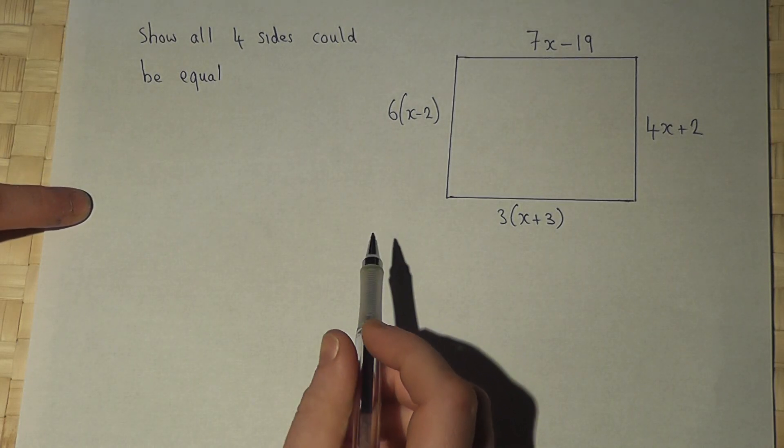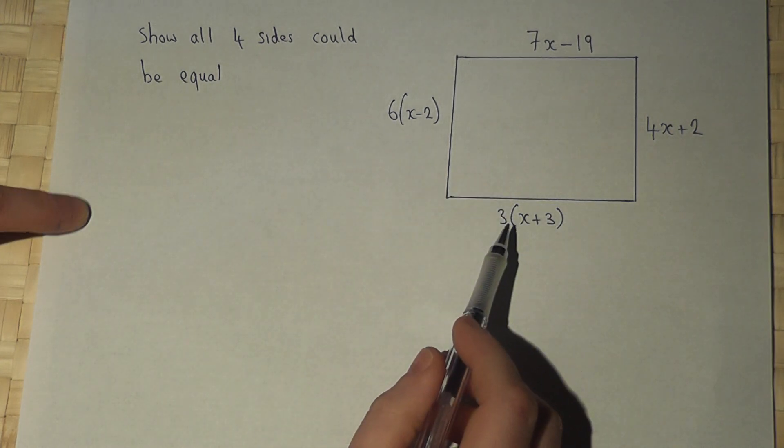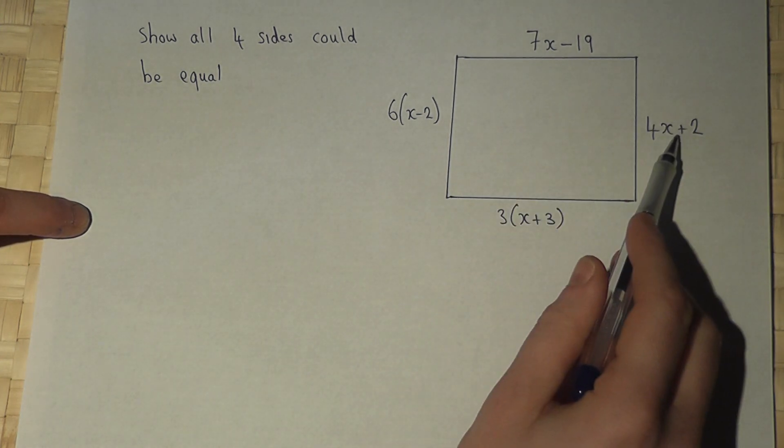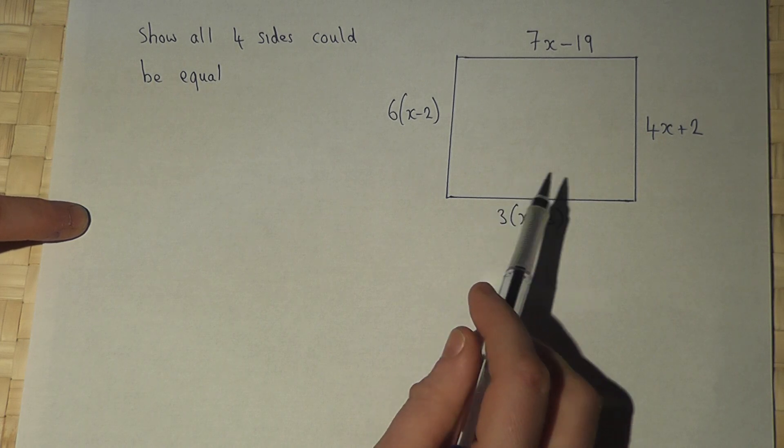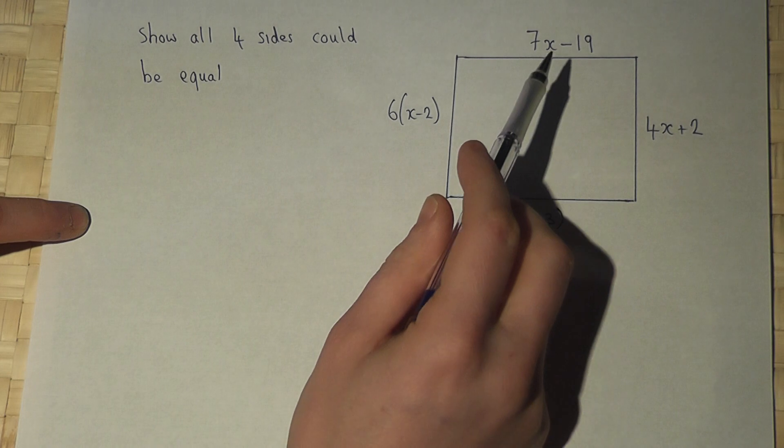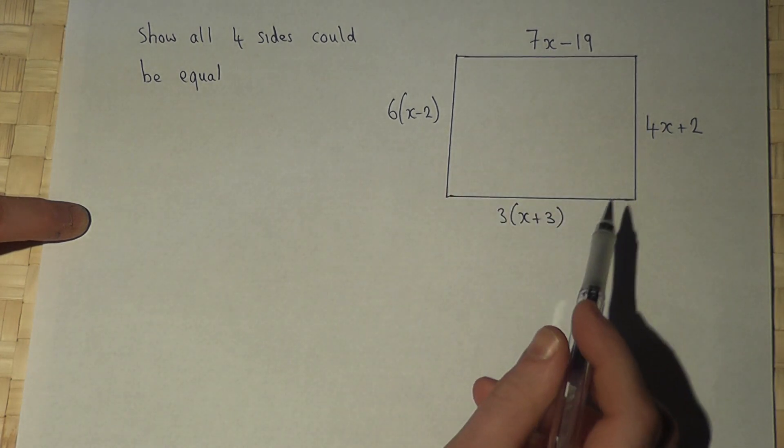In this problem, we're asked to show how there's a value of x which makes all four sides equal. Now, to find x, we have to work out where two sides, for example, are the same.